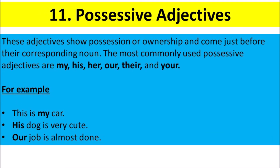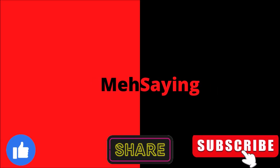Possessive Adjectives. These adjectives show possession or ownership and come just before their corresponding noun. The most commonly used possessive adjectives are: My, His, Her, Our, Their, and Your. For example, This is my car. His dog is very cute. Our job is almost done. Thank you.